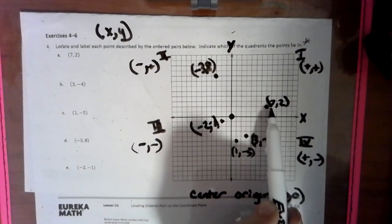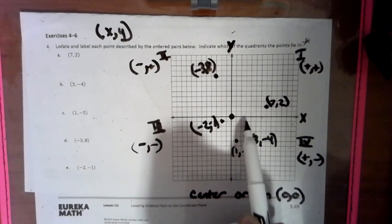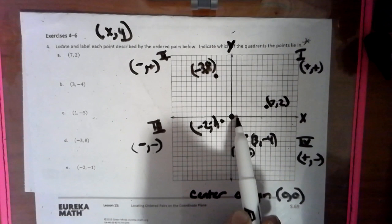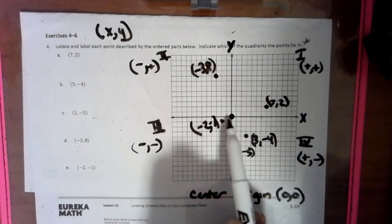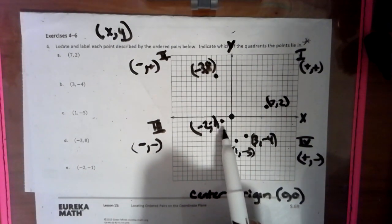So we went over to the 7, up 2, over to the 3, down 4, over to the 1, down 5, over to the negative 3, up 8, over to the negative 2, down 1.